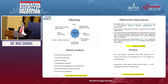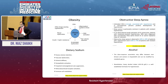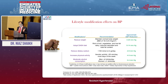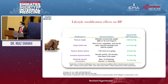Obesity, dietary sodium, sleep apnea, and alcohol are all important contributing factors to blood pressure. Controlling lifestyle factors — including weight reduction, the DASH diet, and physical activity — can all have a variable effect of between 5 to 10 millimeter reduction in blood pressure. Combining drugs from different classes is approximately five times more effective in lowering blood pressure than doubling the dose of one particular medication.